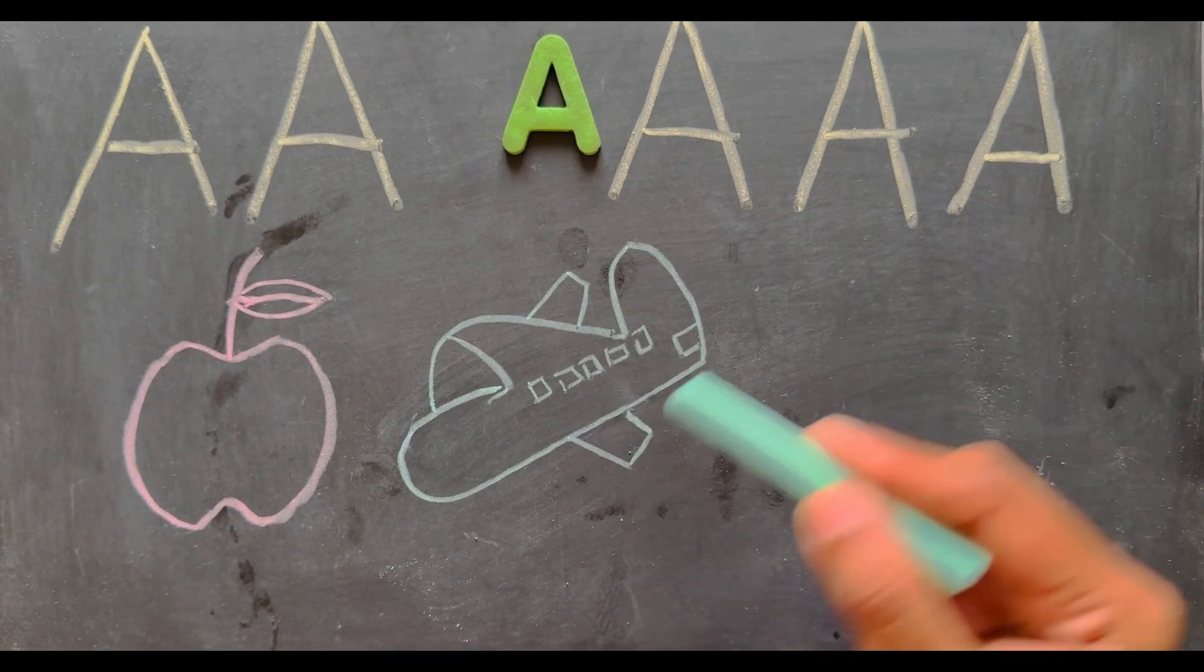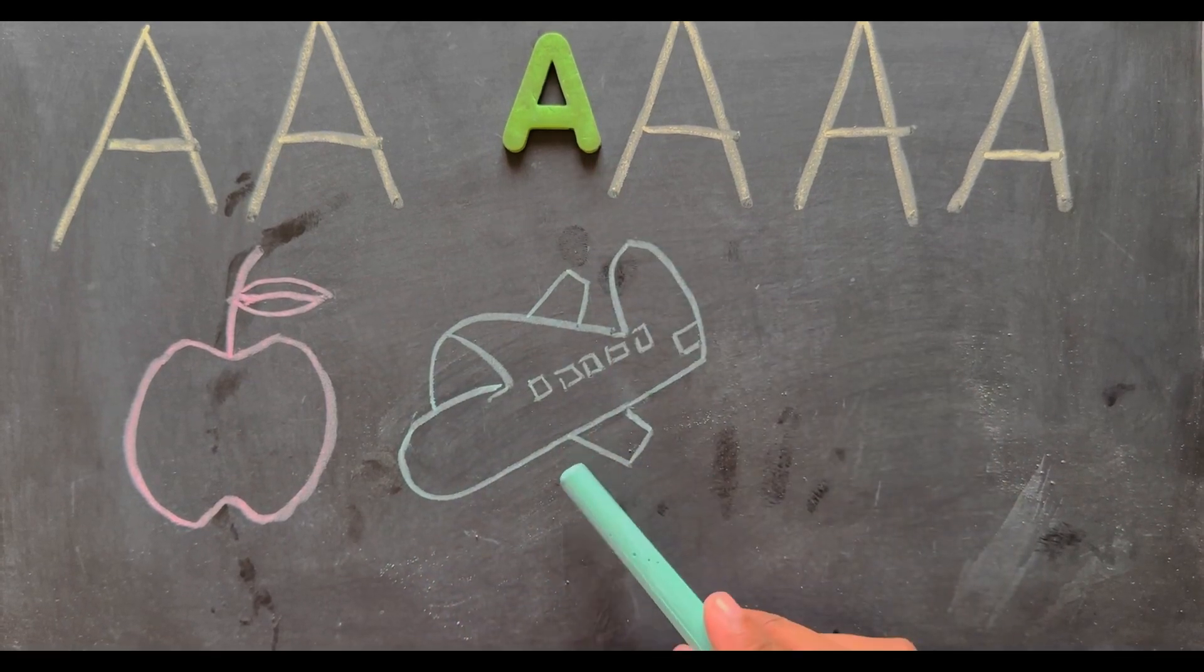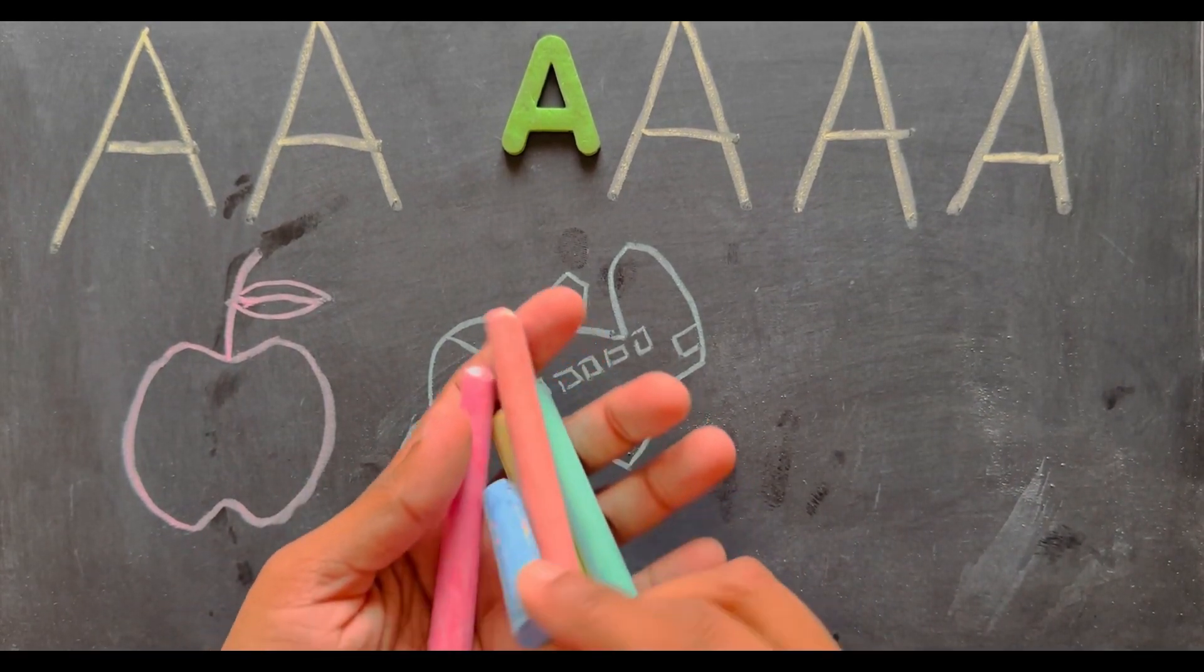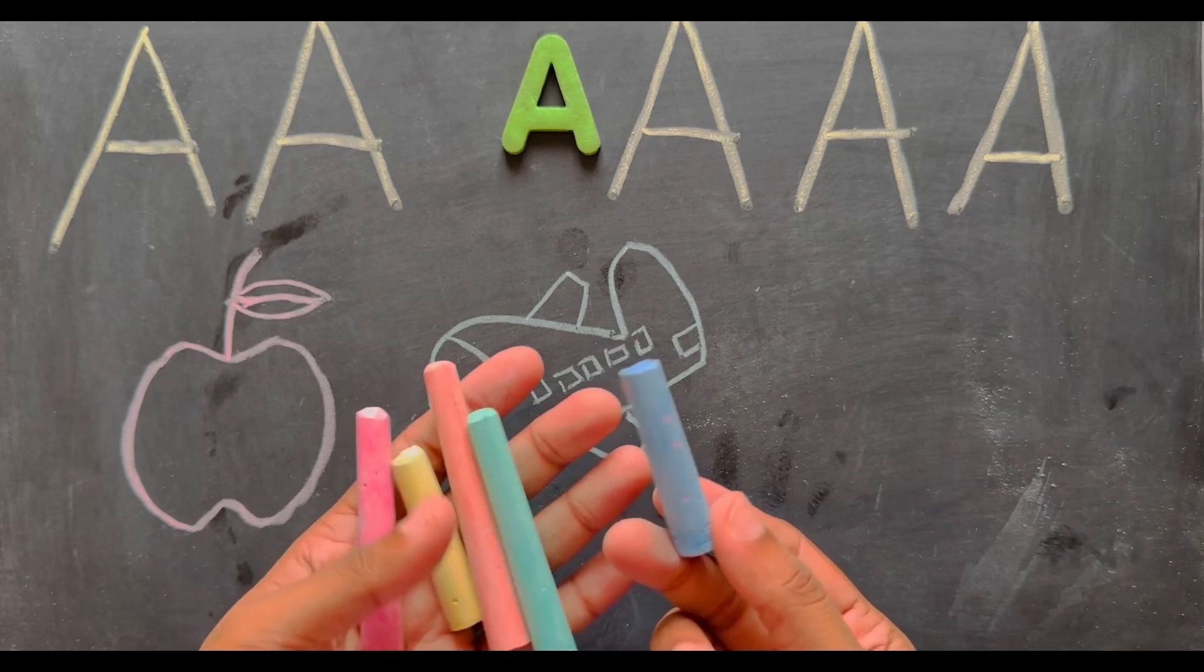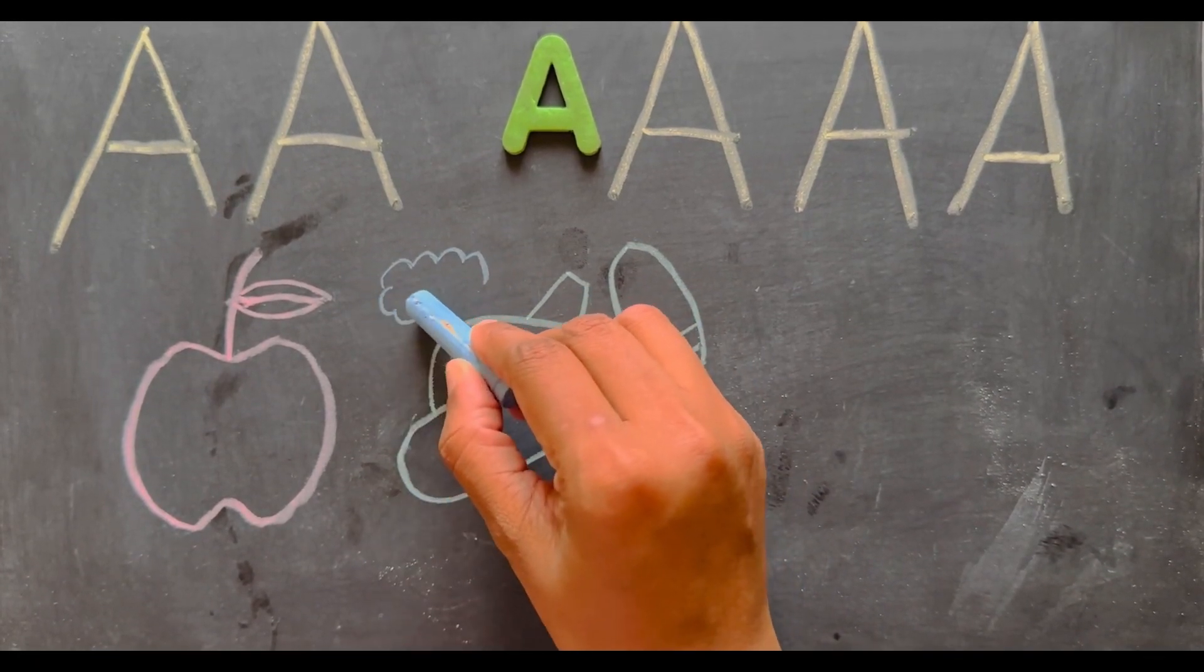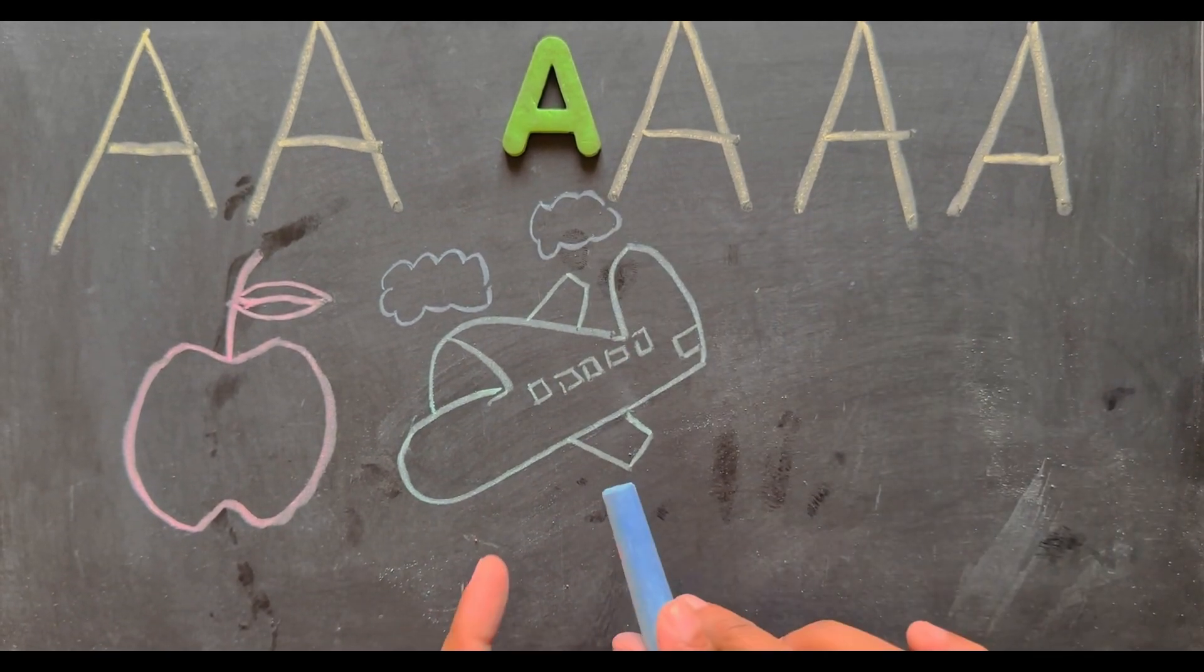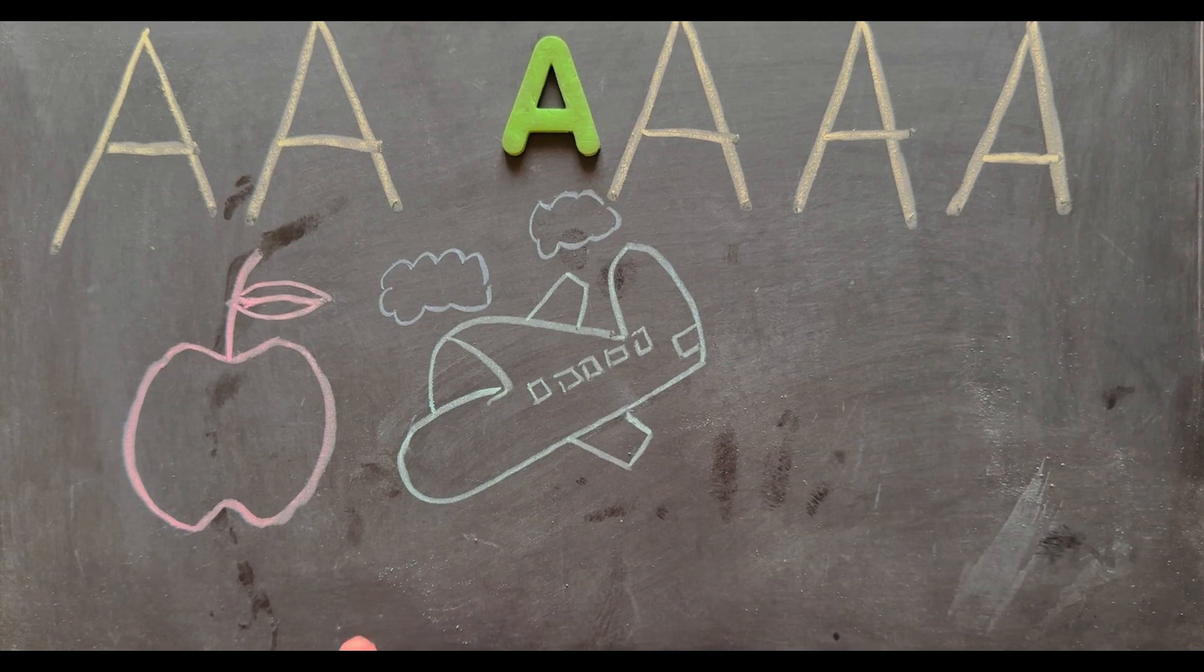A, airplane. So we have drawn an airplane. I am going to draw some clouds for the aeroplane with blue color. The aeroplane will fly high in the sky. Our aeroplane is flying in the sky.